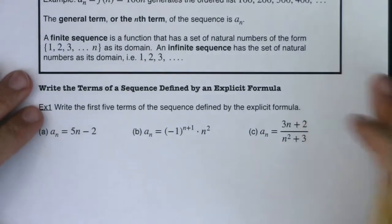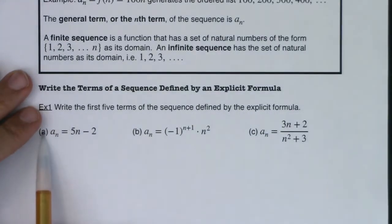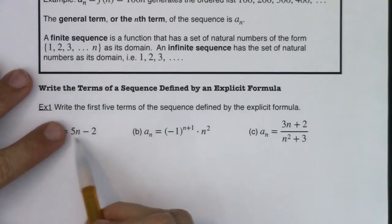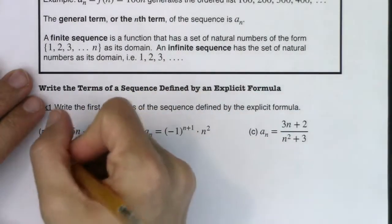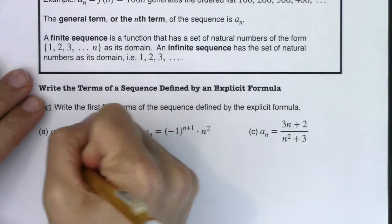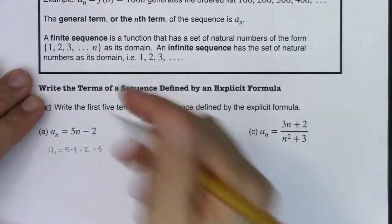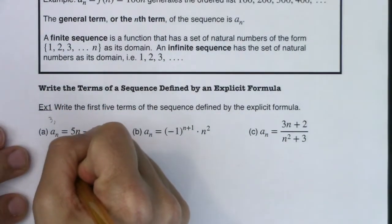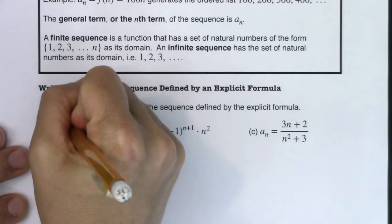Let's generate an ordered list. We want to write the first 5 terms of a sequence defined by the explicit formula a sub n = 5n minus 2 — basically 5x minus 2, a linear expression. So a sub 1 is 5 times 1 minus 2, which is 3. a sub 2 is 5 times 2 minus 2 — that's 10 minus 2, which is 8. So the second term in my sequence is 8.